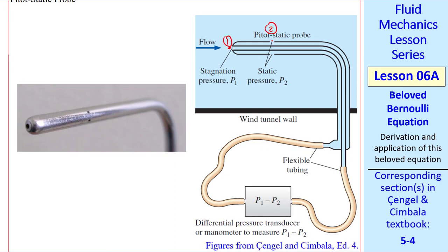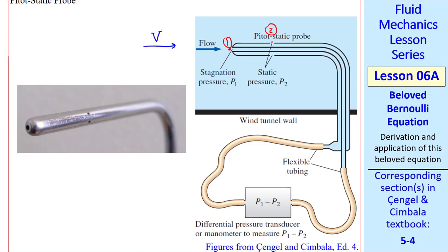Let's call this point 1 and this point 2. And let speed V be the upstream speed we're trying to measure. It turns out that right at the nose, the flow goes to zero speed. We call this a stagnation point. So V1 equals zero. And the pressure is high there because it feels the full brunt of the flow coming at it.